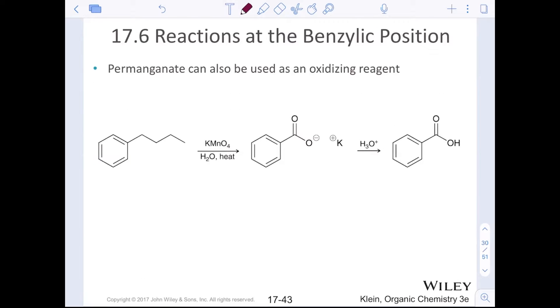Permanganate can also be used as an oxidizing agent. This is one that we might not remember. Permanganate was used in the dihydroxylation of an alkene. This again will do the exact same thing. You just need step number one with the potassium permanganate with water and heat because it's a slightly basic reaction. You do need step number two as an acid workup. No mechanisms for these, just the reaction.